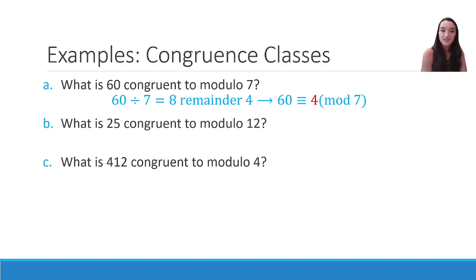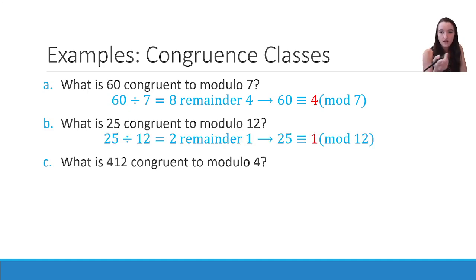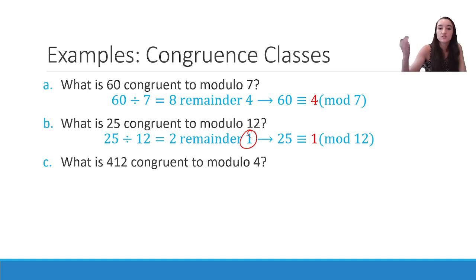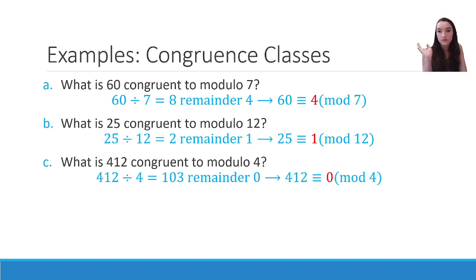What is 25 congruent to in mod 12? 25 divided by 12 is 2 with a remainder of 1, so 25 is congruent to 1 in mod 12. What about 412 in mod 4? Well, 412 is actually divisible by 4: 412 ÷ 4 = 103 with no remainder. So 412 is congruent to 0 in mod 4.